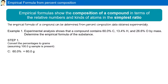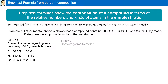So 60% equals 60 grams, 13.4% equals 13.4 grams, and 26.6% equals 26.6 grams. We have converted from percentages to grams. Next, we need to convert from grams to moles.